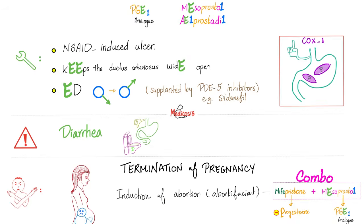Let's say mom is in the hospital with eclampsia and we need to induce right now. We use a combination of mifepristone and misoprostol. Misoprostol is a prostaglandin E1 analog. Mifepristone is a progesterone inhibitor.